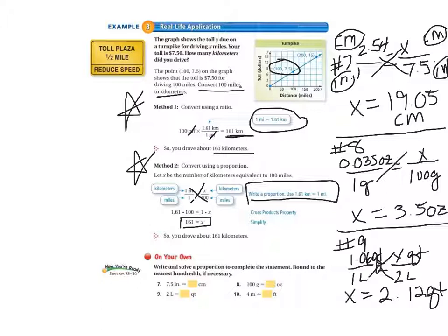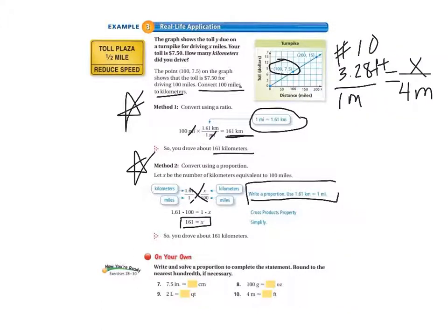Now be sure you have that in your notebook because I am going to erase so that I have room for number 10. So I have set up our number 10 problem as a proportion. 3.28 feet over 1 meter, which I looked up from the back of the book, equals X feet over 4 meters. So I go ahead and cross multiply. 4 times 3.28 equals 13.12.